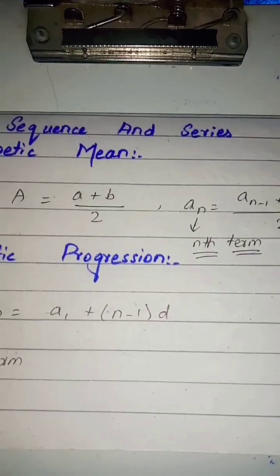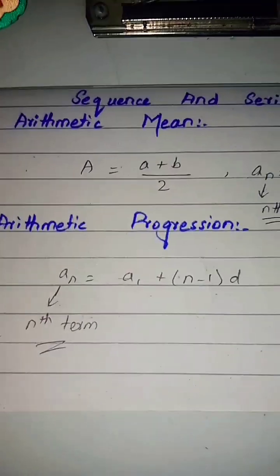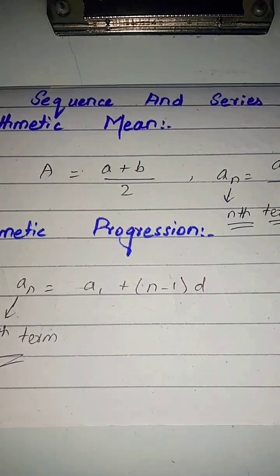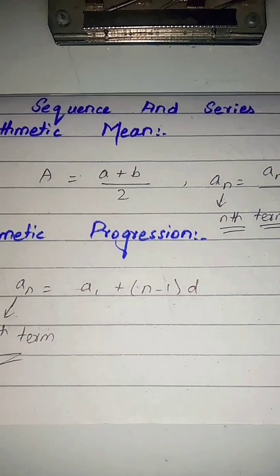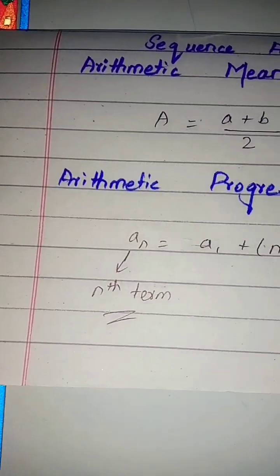When we talk about arithmetic progression, it has a formula: an = a1 + (n-1)d, where d is the distance between two numbers and an is the nth term.